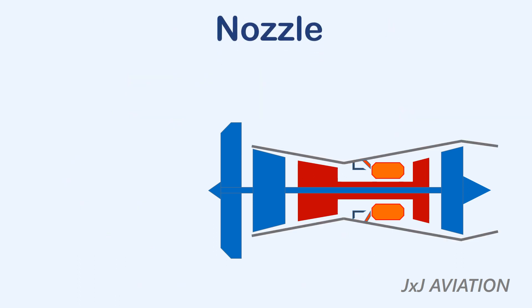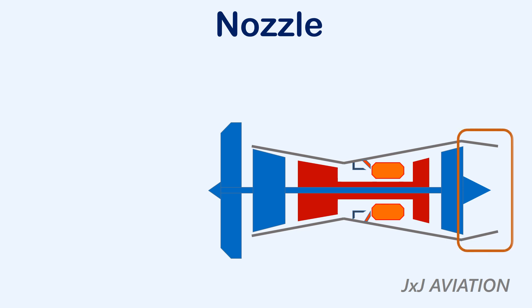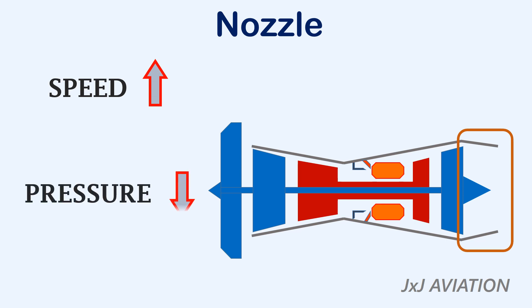The nozzle is where the high pressure gases expand, causing an increase in the speed and a decrease in the pressure of the gases at the exit.